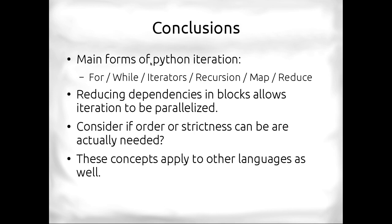Oops, I meant Perl, sorry. So, the main forms of iteration in Perl, not Python, I have a Python talk, are for, while, iterators, recursion, map, and reduce. We want to reduce the dependencies because then we can use map and reduce, and then we can use parallelism. If we don't need to do things in order, then maybe we don't have to do them that way. Maybe we can make gains from parallelism.